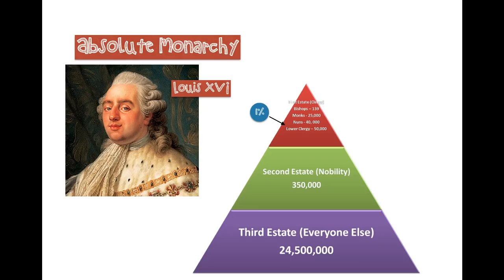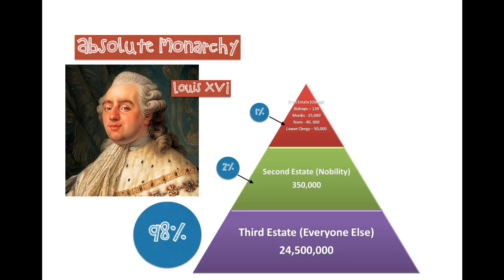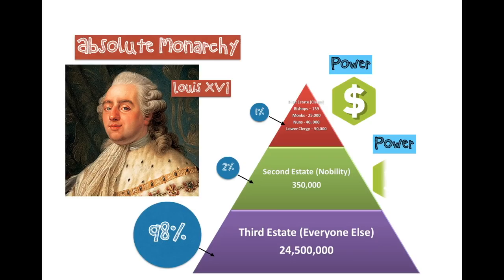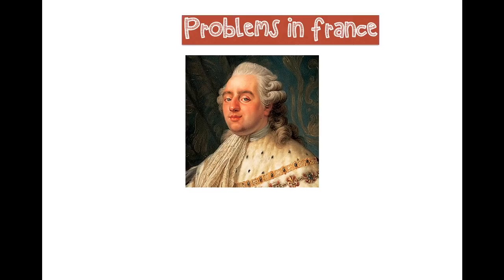The second estate was the nobility — people with titles, people with land — they made up about two percent of the population. Everybody else is in what is called the third estate, which ends up being close to 98 percent of the population in France. You can see they are not equally divided at all. The first and second estates have lots of power and lots of money, while the third estate at the very bottom of society has very little power, very little authority, and very little money. Most everybody in France has nothing, and this system is extremely unbalanced — that's one of the major problems in France.